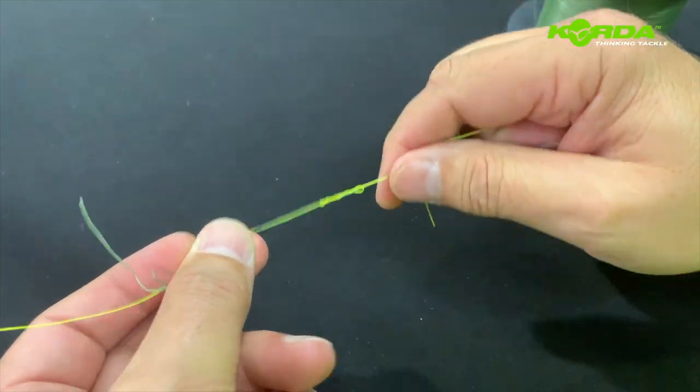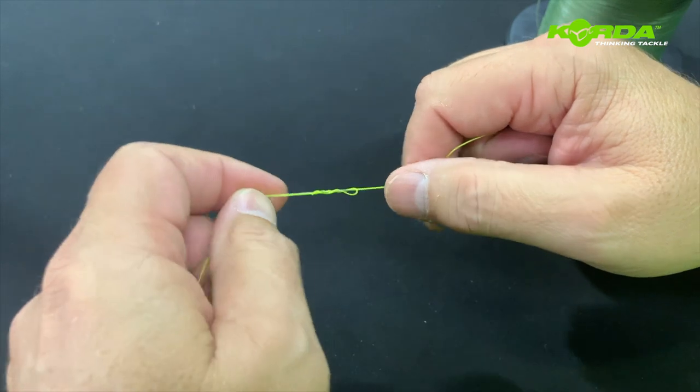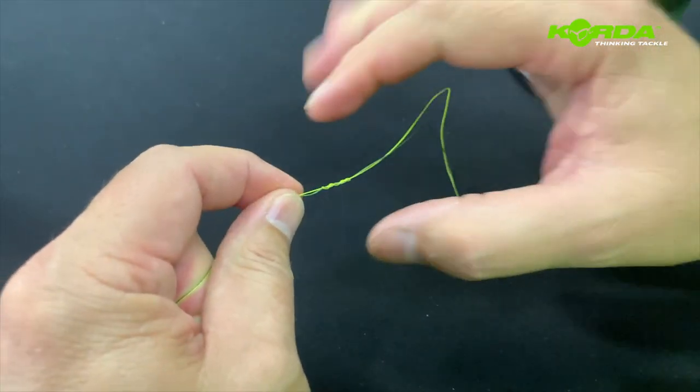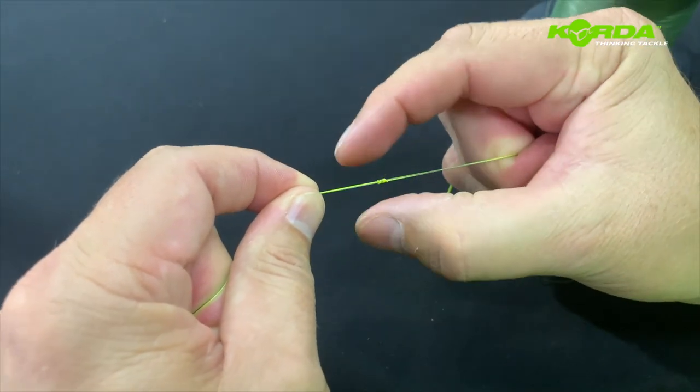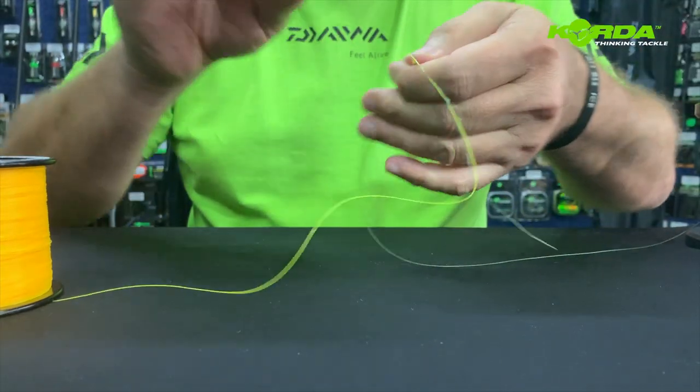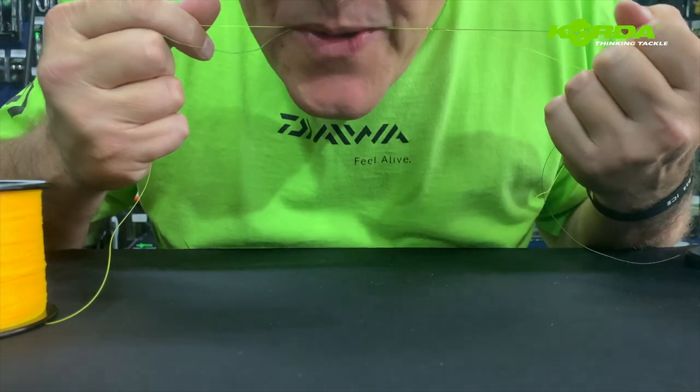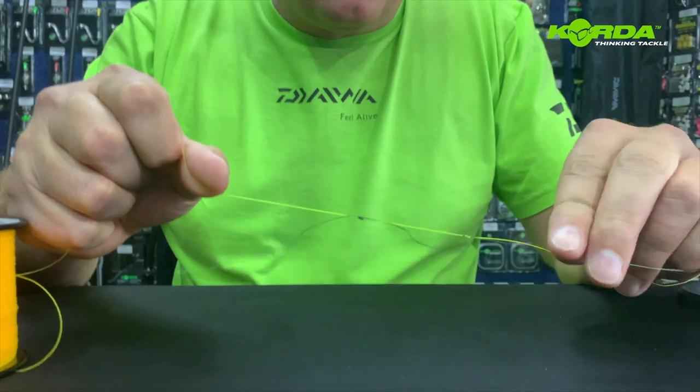Again, just ease the knot in like that. Now wet it with saliva and gently pull.